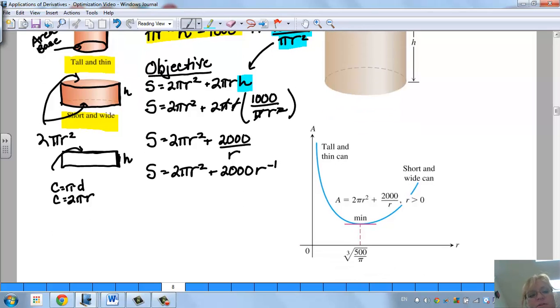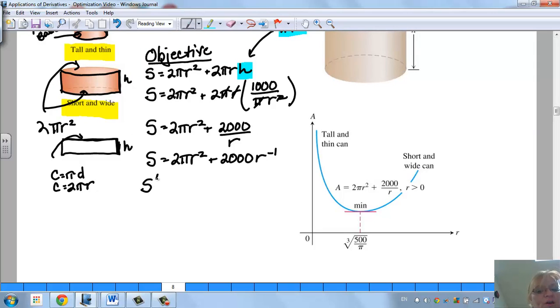We can write that as 2 pi r squared plus 2,000 r to the negative 1, which sets us up nicely to take the first derivative and put it equal to 0. So s prime is going to be 4 pi r minus 2,000 r to the negative 2. Let's rewrite that and put it equal to 0, and bring the r squared down. So I have 4 pi r equals 2,000 over r squared.